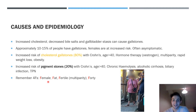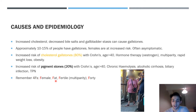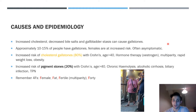A useful mnemonic for cholesterol stone risk factors — though not very politically correct — is the 'four Fs': Female, Fat (overweight), Fertile (having had multiple children), and over Forty.